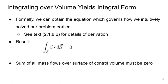Now if we take the differential form and integrate it over a volume, we can get the integral form. This is formally how we get the equation that we intuitively devised to solve our problem earlier. There's a detailed derivation in section 2.1.8.2 of the text if you're interested. But the result is that the integral over the surface of the control volume of the dot product of the velocity and the surface normal is zero. The sum of all mass flows over the surface of the control volume must be zero. Okay, so that's the end of part four.